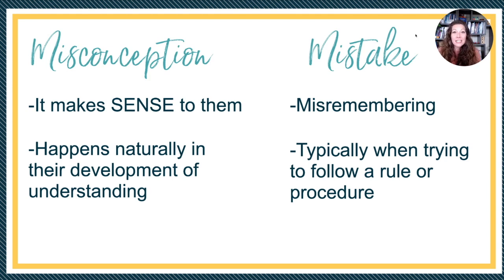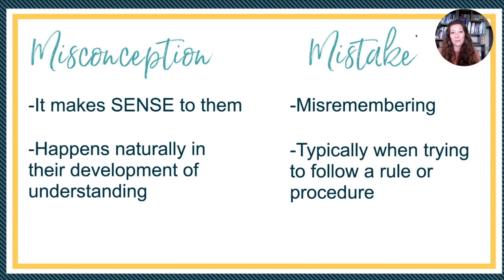Both often lead to a wrong answer, and so if we don't dig into how the students are thinking about it, we don't often know if it's a mistake or a misconception. A mistake is often when a child misremembers something like a fact or a procedure. It happens usually when they're trying to follow a rule and a procedure, but they don't remember the exact steps, or they see a fact.